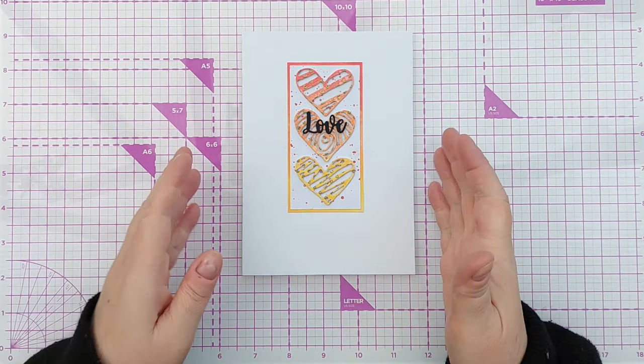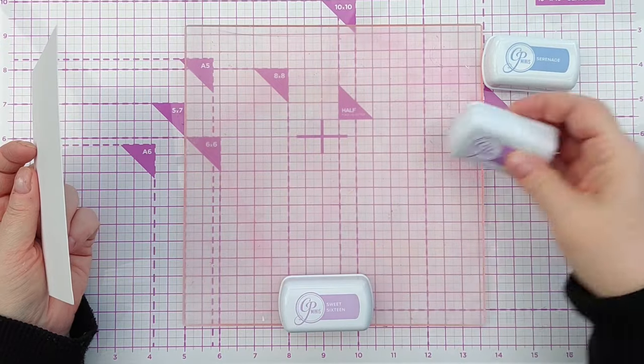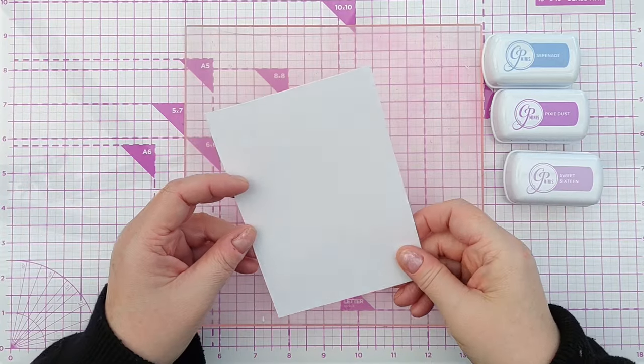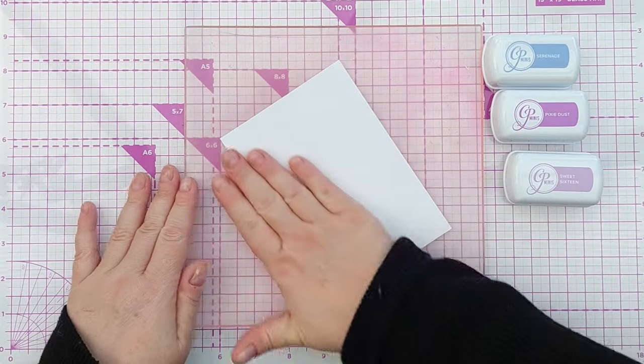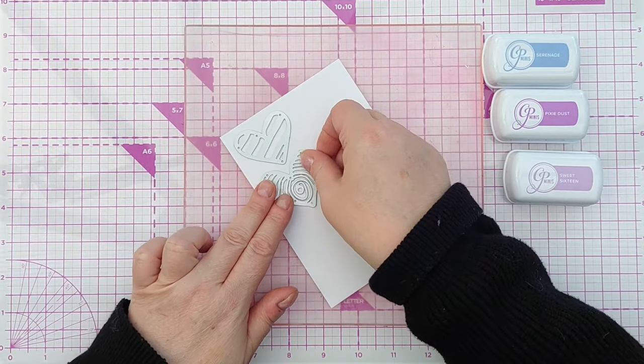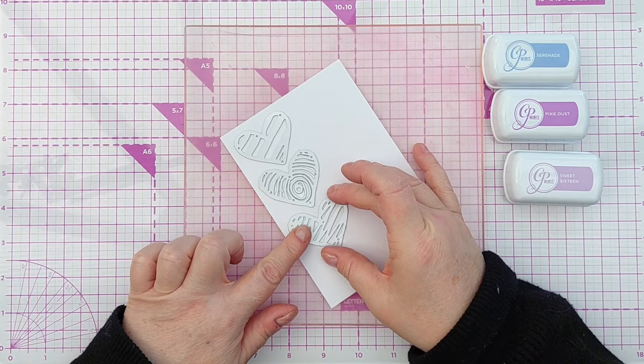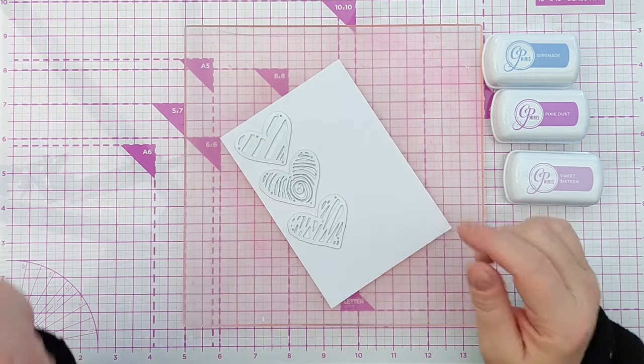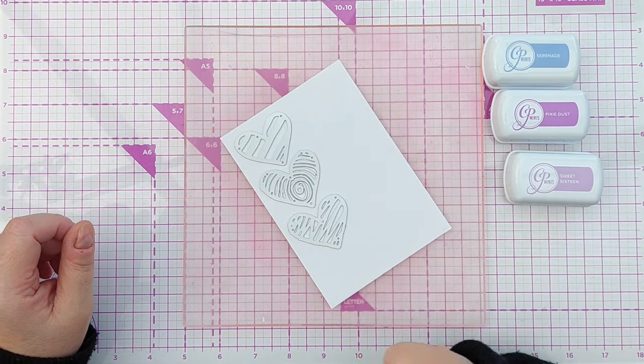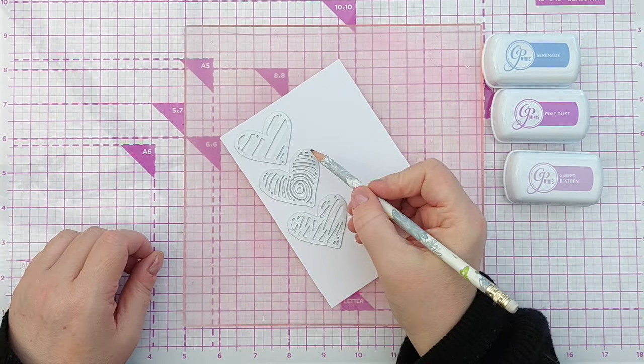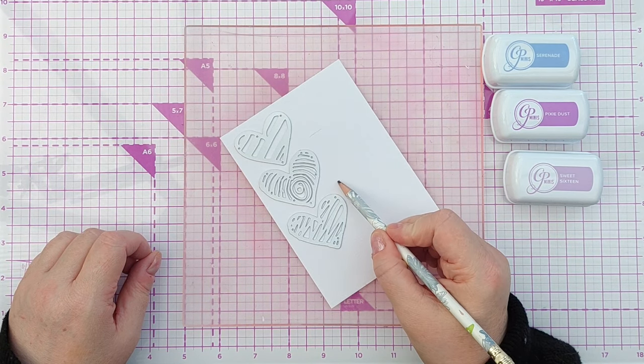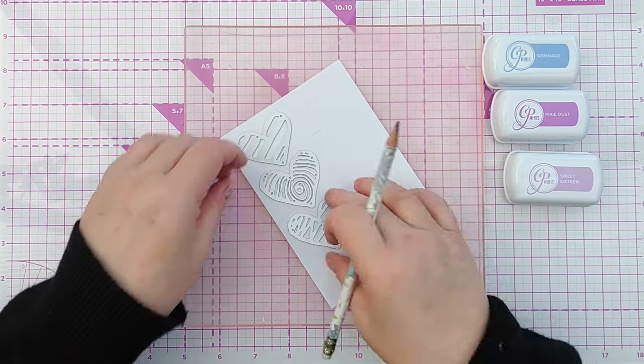The first thing we're going to do is make our hearts. So I've got Catherine Pooler inks from the Party Collection, we've got Serenade, Pixie Dust, Sweet 16, and some mixed media paper. These are the dies we're going to use. I want to blend them so the blendy bits overlap each heart. I'm just going to mark with a pencil line to remind myself where I want the blended area to be.